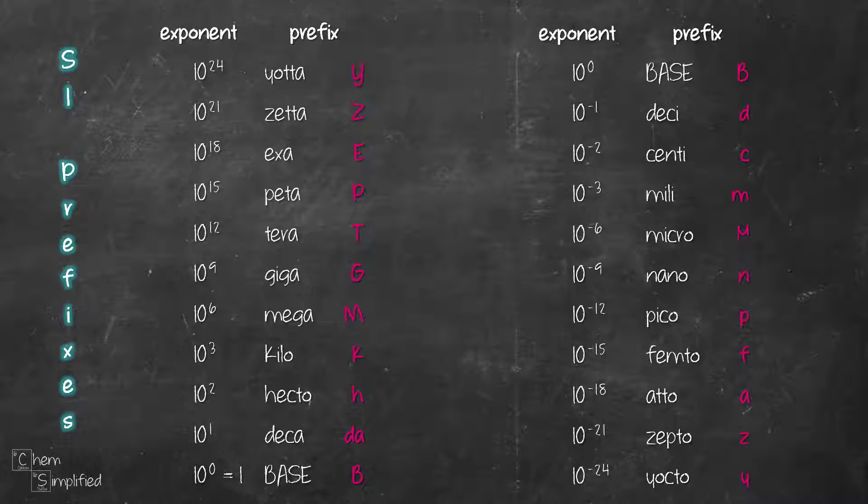I've come up with a mnemonic that will help us remember all the 20 SI prefixes. To make it easier to remember, I've broken it into two parts. The first part is for the positive exponent and the second part is for the negative exponent.